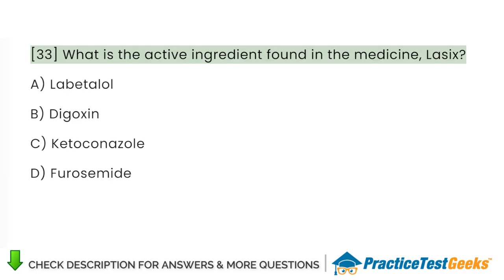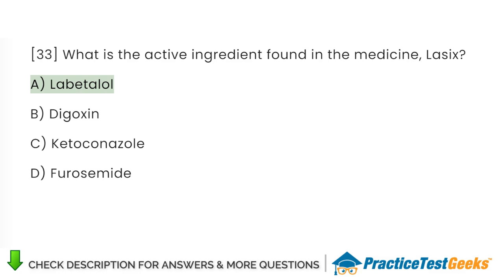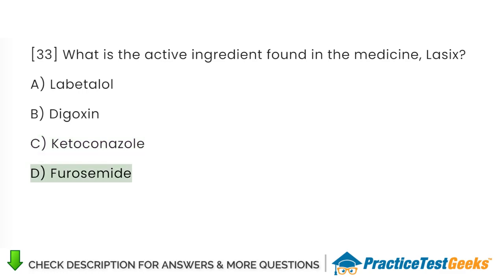What is the active ingredient found in the medicine Lasix? A. Labetalol. B. Digoxin. C. Ketoconazole. D. Furosemide.